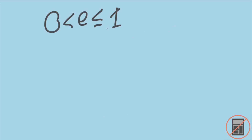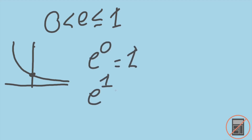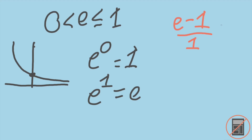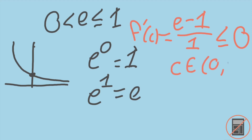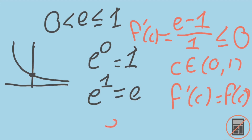If e is between 0 and 1, we get an issue because our function e to the x will be decreasing over time. In particular, e to the 0 will equal 1, while e to the 1 equals e. Therefore, the slope over this period is e minus 1 over 1. If e is less than or equal to 1, this will be less than or equal to 0. However, this is impossible because by the mean value theorem this would imply the derivative equals f of c for some c between 0 and 1, giving a non-positive value for e to the c, which is a contradiction since it must always be positive.